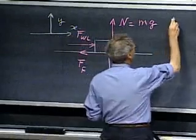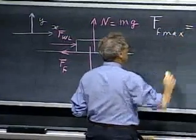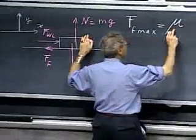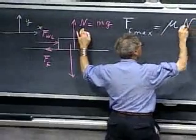And that maximum value that the friction can achieve, this is an experimental fact, is what's called the friction coefficient mu, which has no dimension, times this normal force.